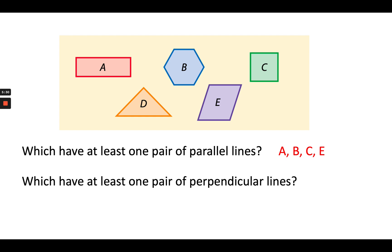C is a square, which has right angles — lines that meet right at 90 degrees — so C would be one. When I look at D, I see two acute angles, but at the top I see what looks like 90 degrees, making that 90-degree angle. So D would have those two perpendicular lines creating that 90 degrees. When I look at E, the opposite angles are obtuse or acute, so E would not have perpendicular lines. So figures A, C, and D form those perpendicular lines.